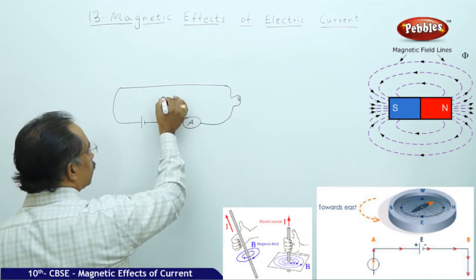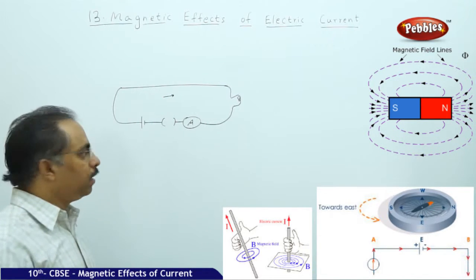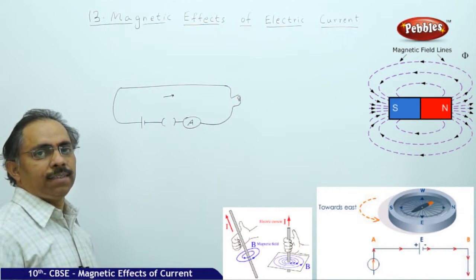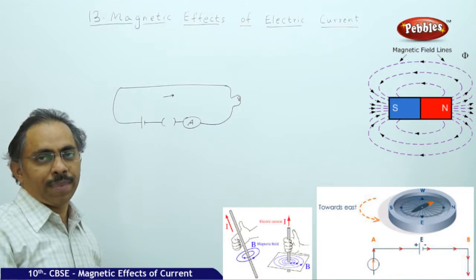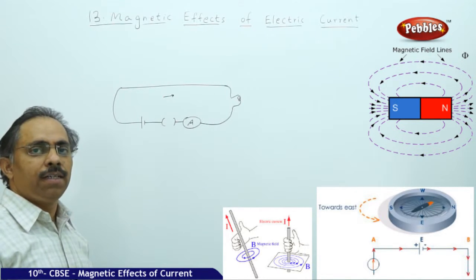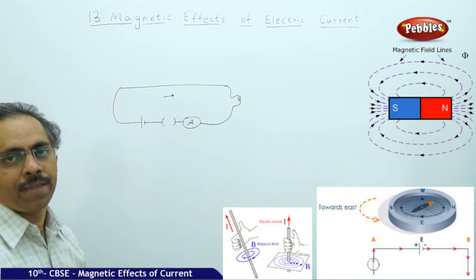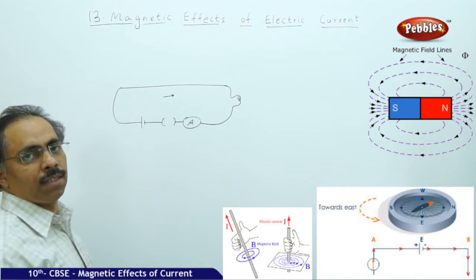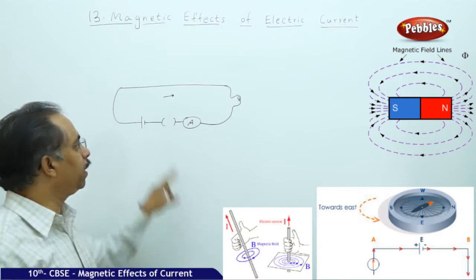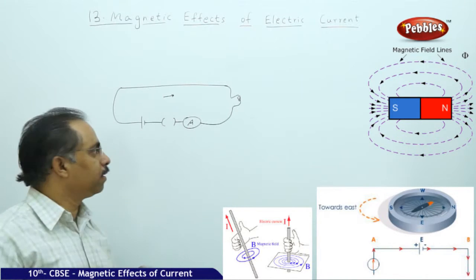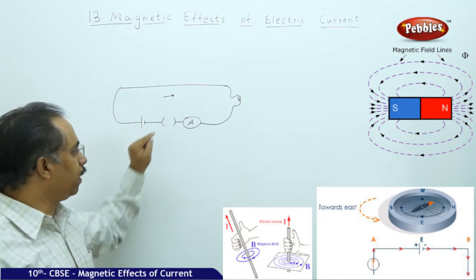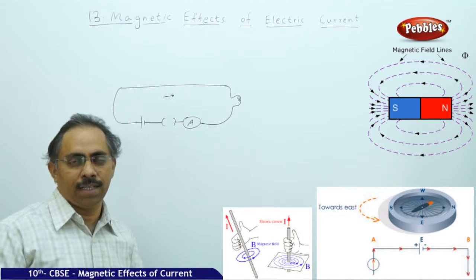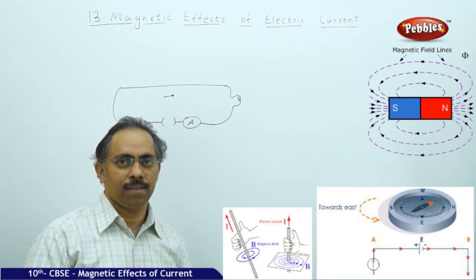If I place a compass below the wire and switch it on, I observe a deflection in the needle. When I switch it off by removing the plug key, the needle returns to its normal position. This clearly shows there is a link between the magnetic field and the electric current — when current passes, a magnetic field is produced, causing the needle to deflect.